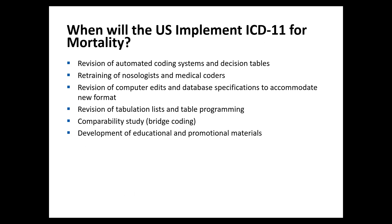From a U.S.-centric perspective, when will the U.S. implement ICD-11 for mortality? There were two pathways for ICD-10 in the U.S. — a mortality pathway and a morbidity pathway. For mortality, there are a number of steps that must occur: revision of automated coding systems and decision tables, retraining of nosologists and medical coders — and these are nosologists and medical coders at state health departments who process death certificates and send that information to NCHS, which is how we derive underlying cause of death statistics. And of course, revision of computer edits, database specifications, changes to tabulation lists, table programming, comparability studies, and development of educational and promotional materials.